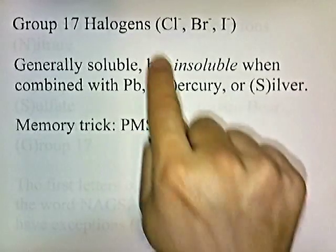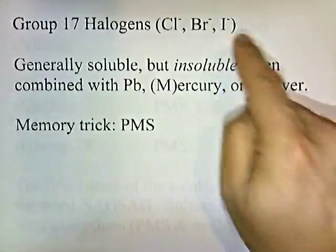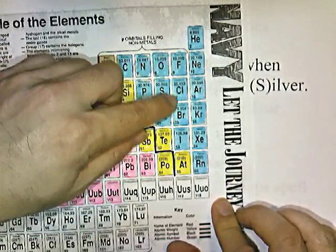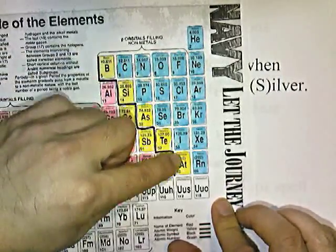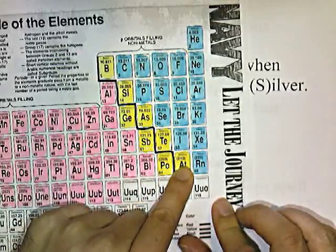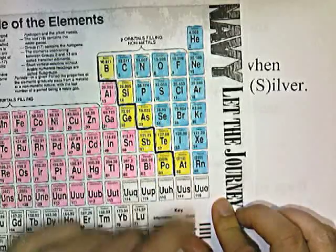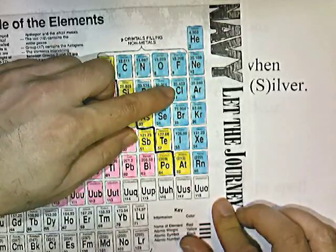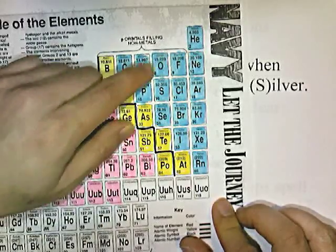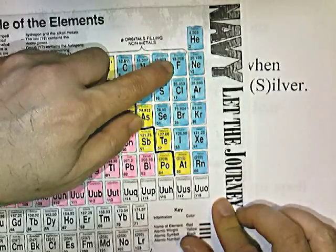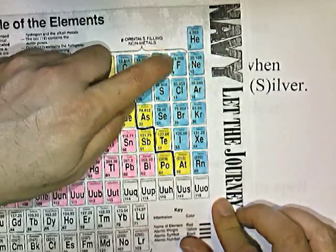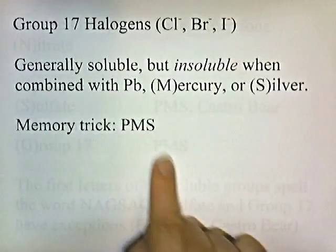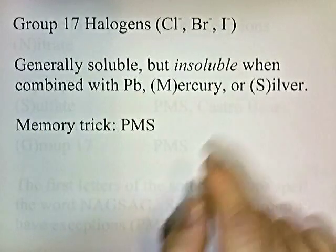You'll notice that this list of halogens doesn't contain fluorine. The group 17 elements are fluorine, chlorine, bromine, iodide, and astatine. Astatine is a very rare, radioactive element with a half-life of about eight hours. I only include chloride, bromide, and iodide because fluoride, in general, is not soluble. So those three are the soluble ones, except when combined with lead, mercury, or silver.